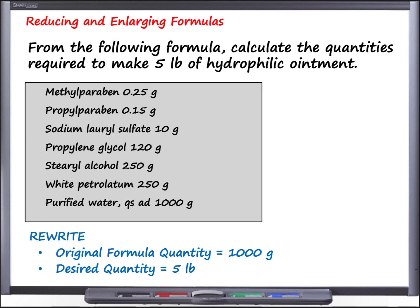What we are doing here is needing to compound this hydrophilic ointment. It goes beyond the scope of this podcast to address what the purpose of these individual ingredients are, but they are all important in the formulation. The ingredients include methylparaben, propylparaben, sodium lauryl sulfate, propylene glycol, sterile alcohol, and white petrolatum in the amounts given per gram in the formula. The last ingredient, be sure to read carefully, says purified water, QSAD, 1,000 grams. QSAD means add additional amount up to a total of 1,000 grams. So this formula gives us all these specific ingredients to prepare 1,000 grams of this hydrophilic ointment.